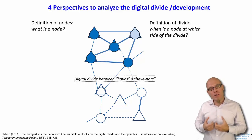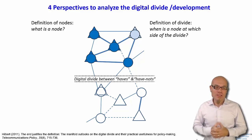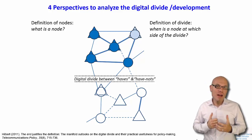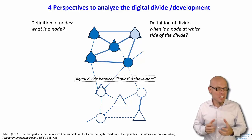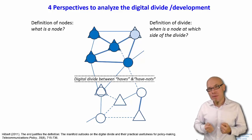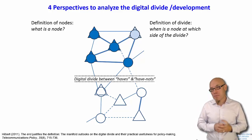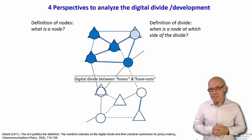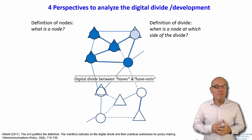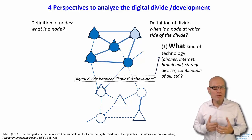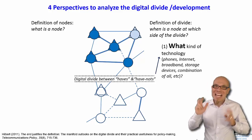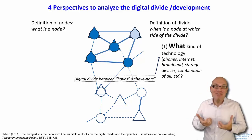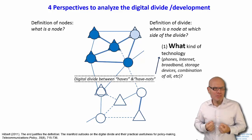Here I created a schematic network with a diffusion process, and we have to ask several questions if we want to define this dynamic. These lead to different perspectives on the digital divide and therefore different definitions of the digital divide. First of all, we have to ask what kind of technology are we talking about — what do these colored nodes have to have in order for me to color them?